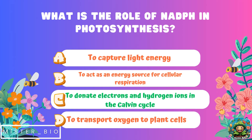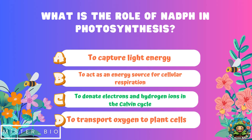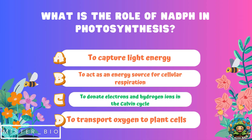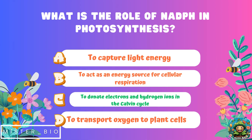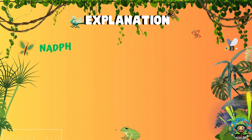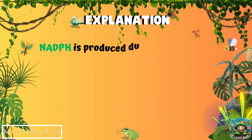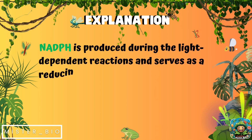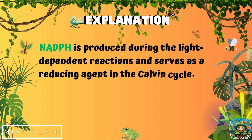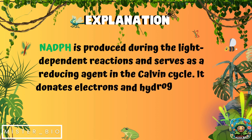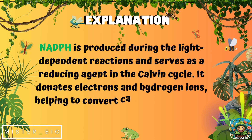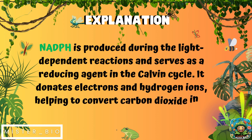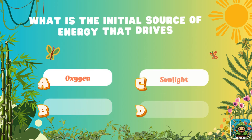The correct answer is C, to donate electrons and hydrogen ions in the Calvin cycle. NADPH is produced during the light-dependent reactions and serves as a reducing agent in the Calvin cycle. It donates electrons and hydrogen ions, helping to convert carbon dioxide into glucose.